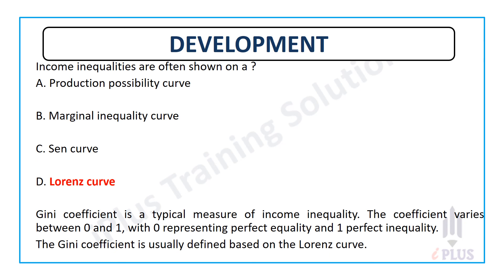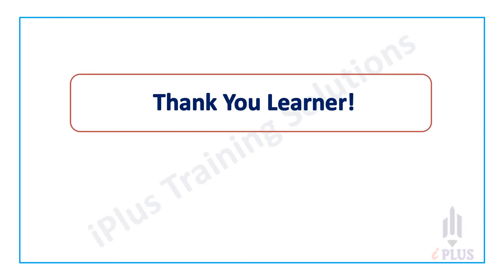In this class, we discussed very important topics: income inequality, the Lorenz curve, the Gini coefficient, the Kuznets inverted U-shape curve, and the structuralist view of underdevelopment. The Gini coefficient and Lorenz curve are the main items to understand. These are very important topics. Thank you, dear learners.